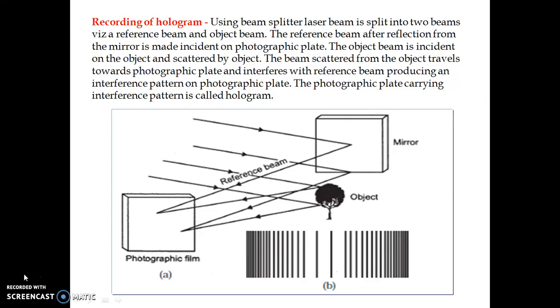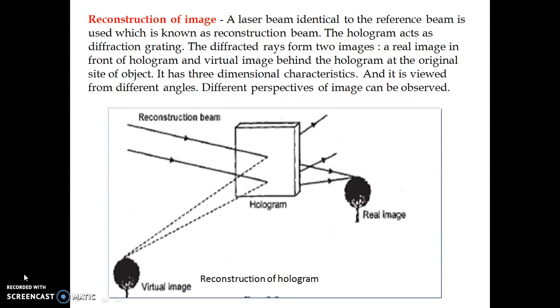So you can see here the reference beam and object beam - they are simultaneously incident on photographic plate. So they interfere and produce interference pattern. And you can see here interference images in figure B. And that photographic plate with interference pattern is called hologram. Now this hologram contains amplitude as well as phase variation.